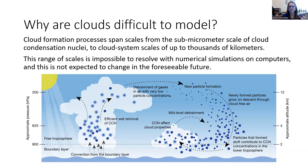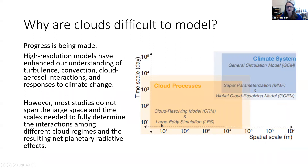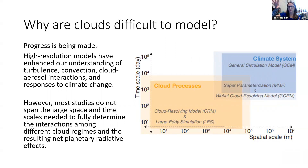This range of scales — from sub-micrometer to thousands of kilometers — is just too much information for us to numerically simulate, even on the best computers we have today. It's not looking like we'll be able to model this vast range of scales in the foreseeable future, even as our technology improves. It just requires so much processing power. When we look at climate system models, we tend to only focus on larger spatial and time scales, so our climate models don't overlap with cloud processes and we're not able to model them well at this time.